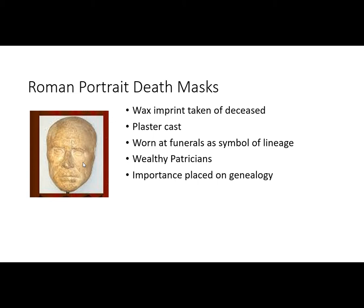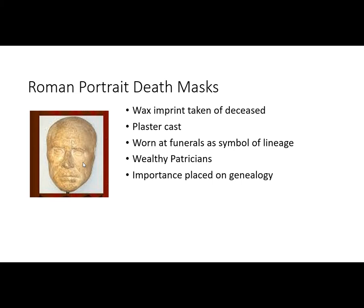We saw the seer and the old market woman in the last chapter, but the Romans have another reason for showing age: only elders held power in the Republic. So if you're a wealthy, older person, you are probably a powerful person in Rome. This is the head of a Republican priest, and we're going to call this style veristic — meaning super real, also called 'warts and all.' You see every craggy wrinkle in this man's face, his jowls, his sour look. These were qualities of strength — you were a stern and serious person. The Romans believed that a head alone is a portrait.